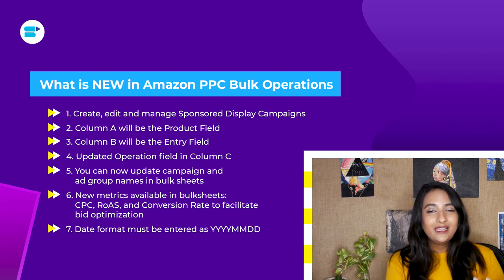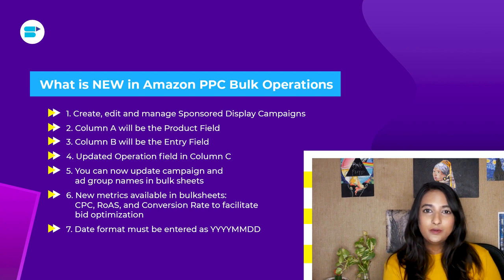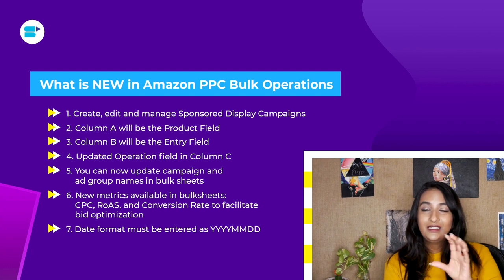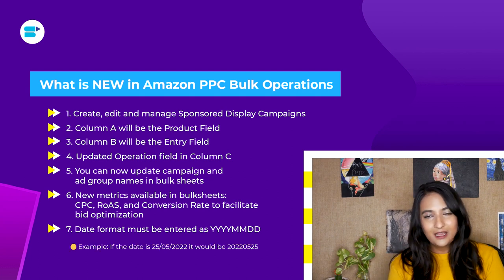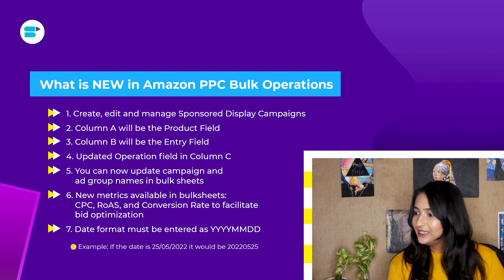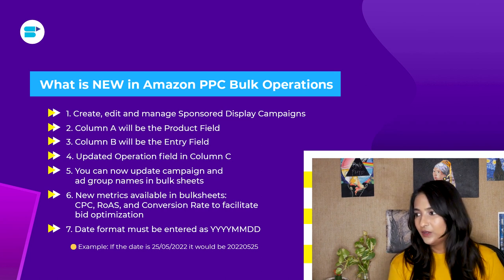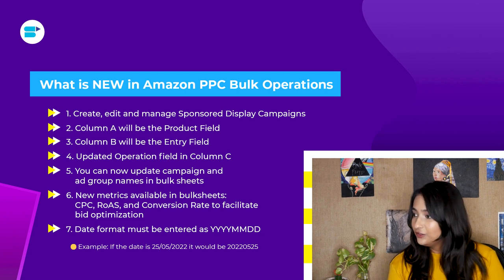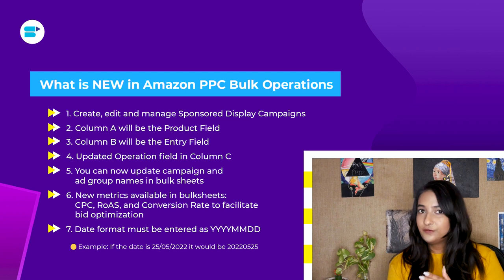Seventh, there is a new updated date format in the new Amazon bulk sheets — you now have to enter your date as year, month, date. For example, if the date is 25th May 2022, you would write it as the year first (2022), followed by the month (05 for May), followed by the date (25). That is everything that is new in version 2.0 of Amazon's bulk sheet.